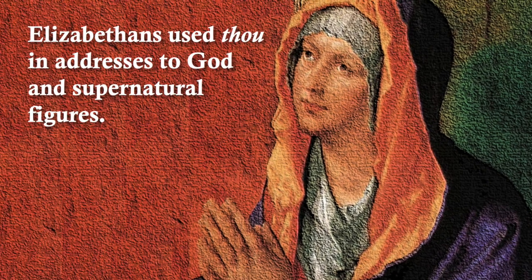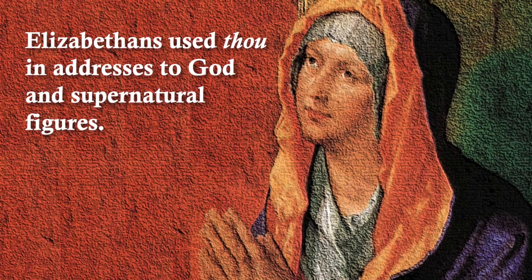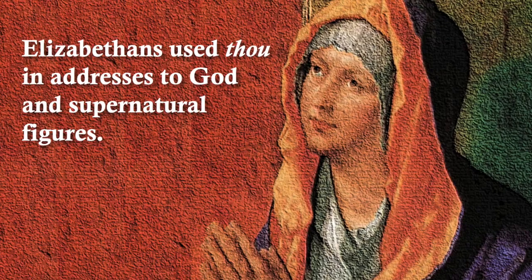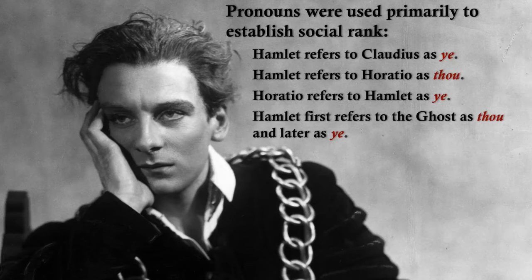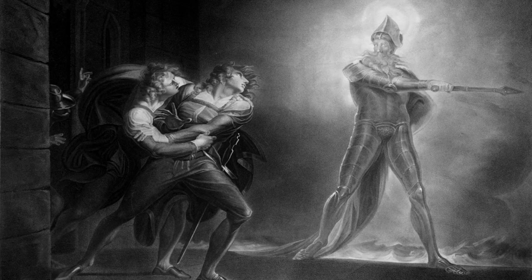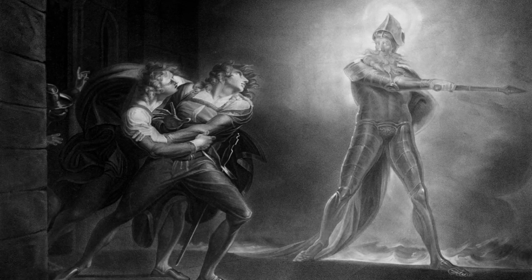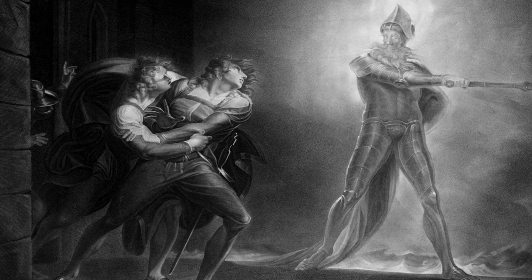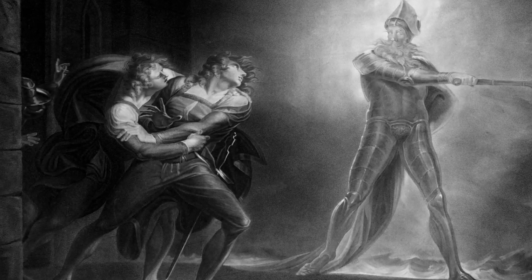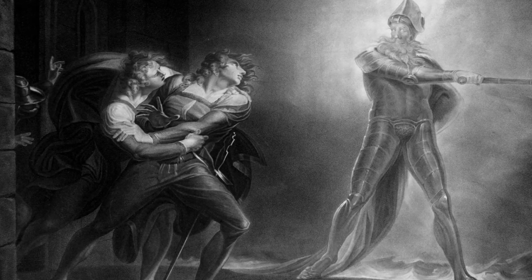Elizabethans continued to use 'thou' in addresses to God and supernatural figures such as ghosts. Thus consider how Hamlet uses 'thou' and 'thee' when speaking to the ghost as he first encounters it. But when he sees the ghost toward the end of the play, Hamlet switches to using 'ye' and 'you,' indicating that he has accepted the ghost as that of his father and king. From this switch in pronoun use, we know that Hamlet did not immediately accept the ghost as that of his father, and that only after Hamlet's mousetrap — the play within the play — did he believe the ghost was genuine and was indeed his father the king, meriting the use of 'ye' or 'you.'